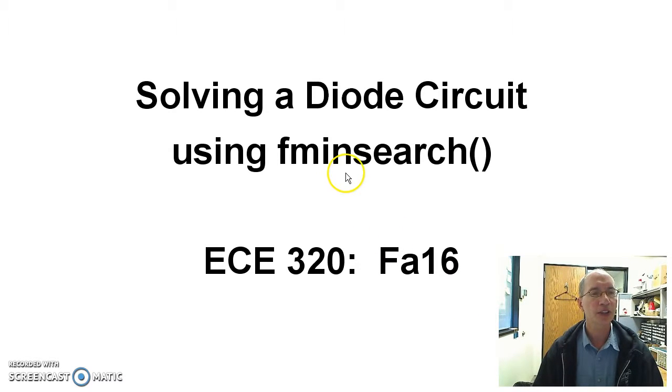Let's look at how to solve a diode circuit using fminsearch in MATLAB. Fminsearch is a very useful function that lets you minimize a function. You can set it up so you can solve N equations and unknowns even if those equations are nonlinear.